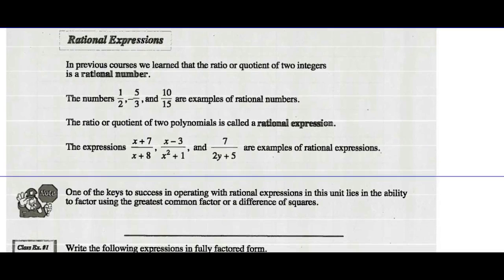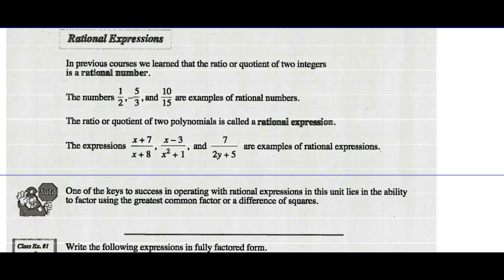In the previous course we learned that the ratio or quotient of two integers is a rational number. Numbers 1 half, negative 5 thirds, and 10 fifteenths are all examples of rational numbers. The ratio or quotient of two polynomials is called a rational expression. So the expression x plus 7 over x plus 8, x minus 3 over x squared plus 1, and 7 over 2y plus 5 are examples of rational expressions.